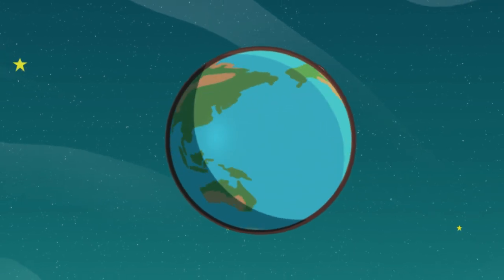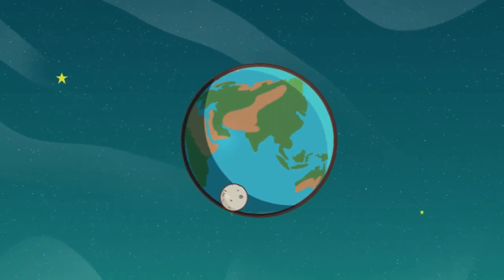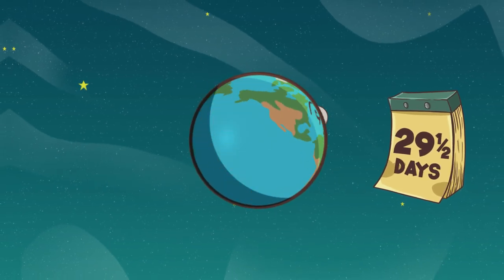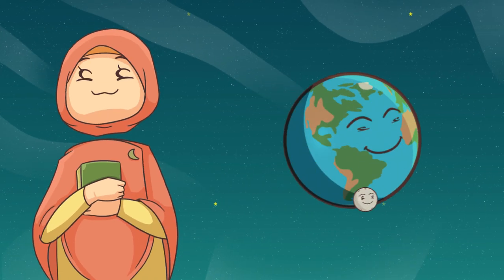The moon rotates around its axis in the same duration that it takes to revolve around the Earth. It takes approximately 29 and a half days to complete one rotation. One cannot help but be amazed at the scientific accuracy of the Qur'an.